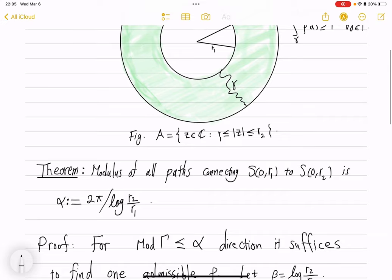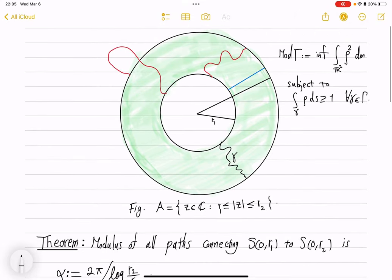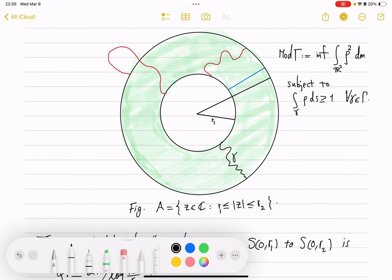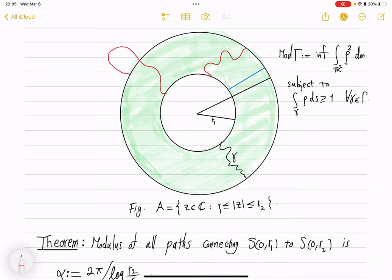Before I continue with proof, let me show you a heuristic argument of how one comes up with an admissible function. Also, the definition of modulus is given up here. So, we want a function that charges every path to at least one. A naive approach here would be that you take ρ to be, well, if you have any curve, it travels at least the girth of this annulus, which is r2 minus r1.